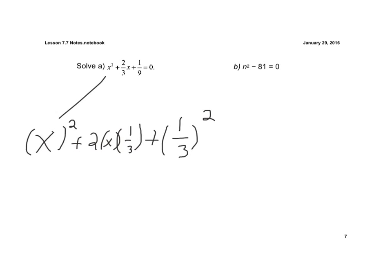And 2 times 1 third is 2 thirds x. So that matches that middle term, so now I'm ready to write it as my binomial all to the second power.